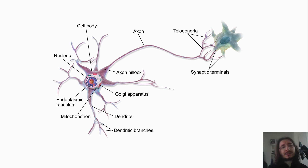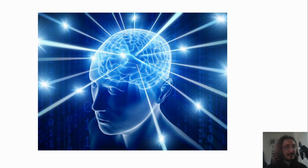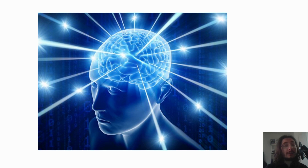A single neuron by itself is obviously remarkable but not super powerful. It becomes super powerful when you put together billions of neurons — the result is basically the brain. The power of the brain doesn't reside in the structure of the neurons themselves but rather in the incredible number of connections among them. We're talking about trillions of connections among billions of neurons, which allows us to walk, play the piano, solve sudoku, and play chess.